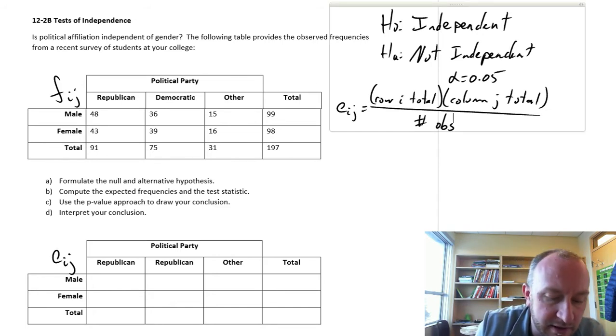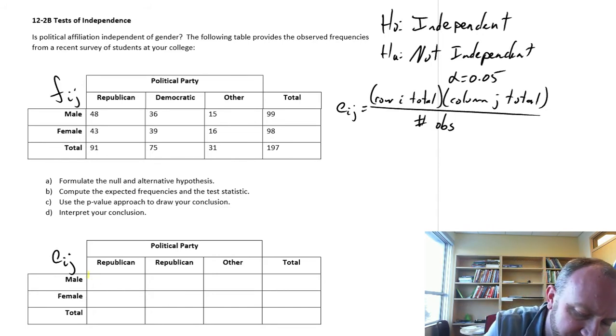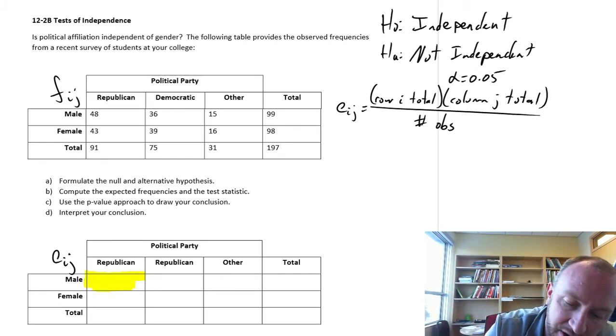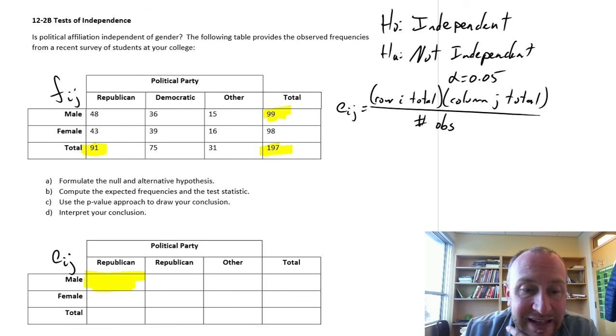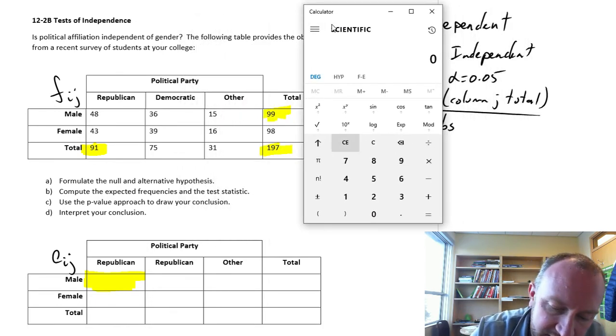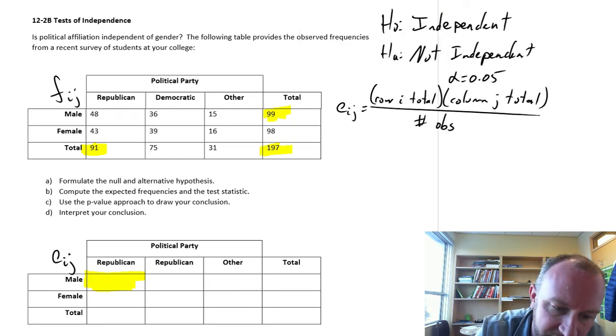For the first one, we'll fill in this cell here. This is the male Republican voters. I want the row total, so that's the total number of men, times the number that voted for Republican, divided by the total. So this is going to be 91 times 99 divided by 197. So 45.7.